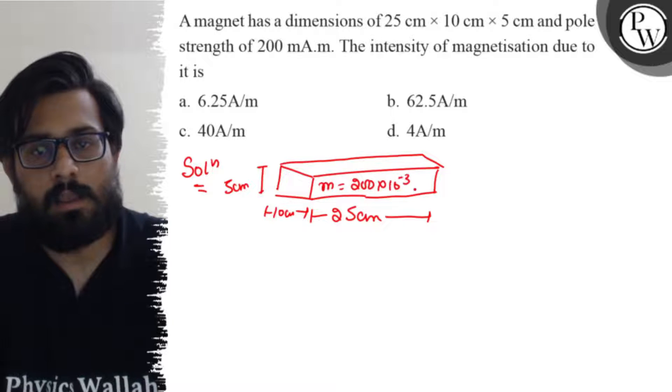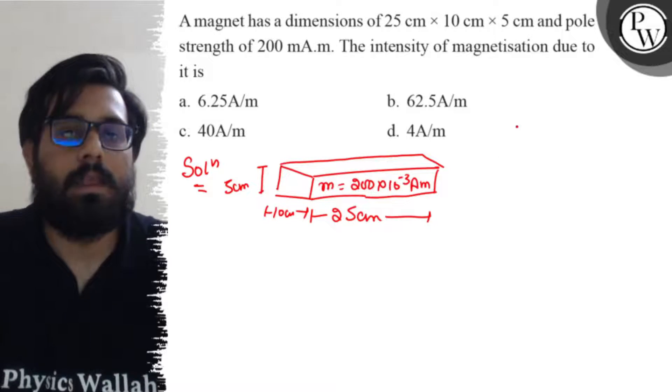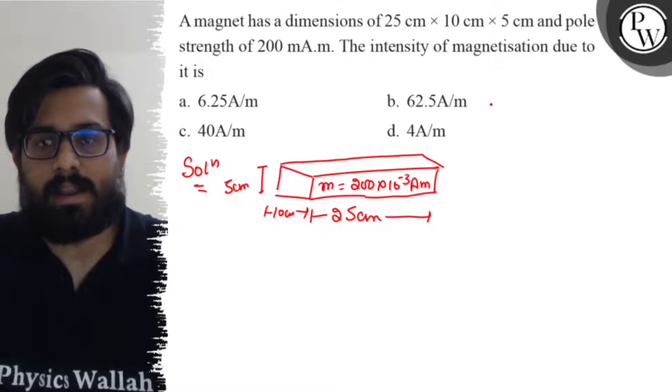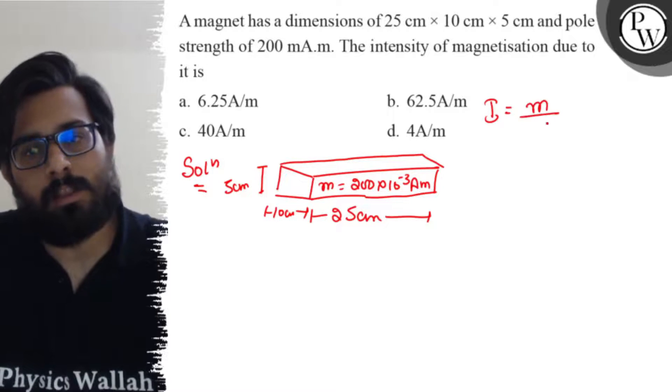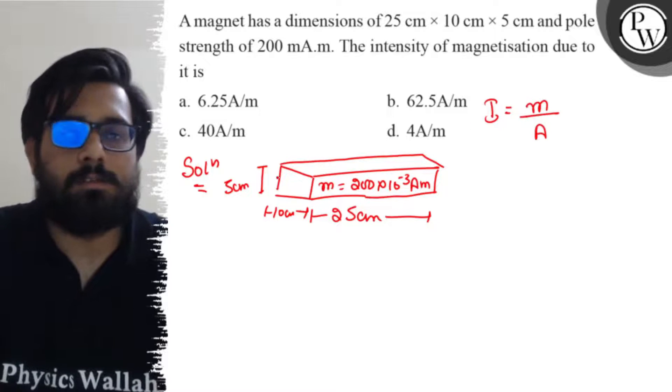The pole strength m is given as 200 × 10^-3 ampere meter and I have to find the value of intensity of magnetization. Now we know that intensity of magnetization is pole strength per unit area of cross section.